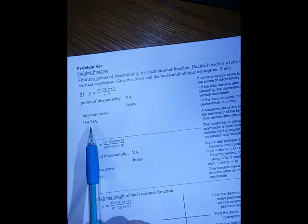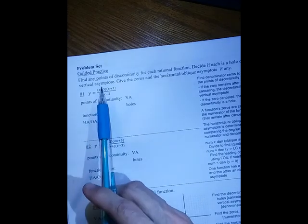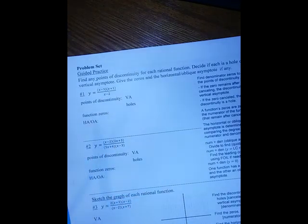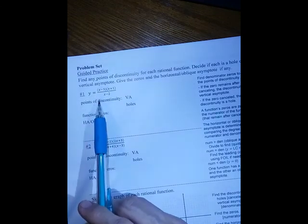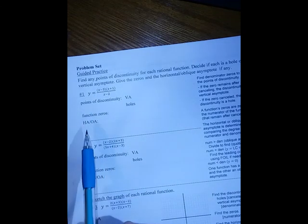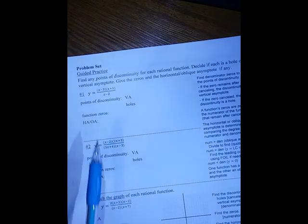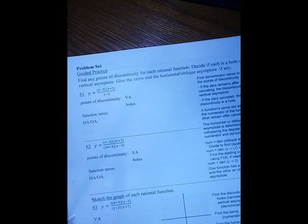And then the horizontal asymptote or the oblique come by comparing the degrees of the top and the bottom. If the bottom degree is bigger, it's y equals zero. If they're the same, you're going to take the ratio of the coefficients. And if the top is bigger, you have to divide the numerator by the denominator to find out what that oblique asymptote is.